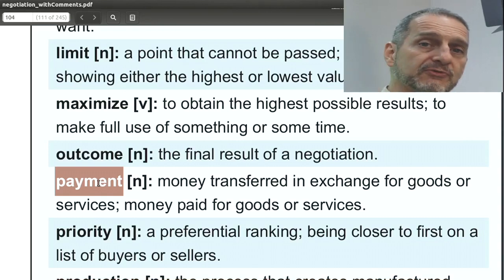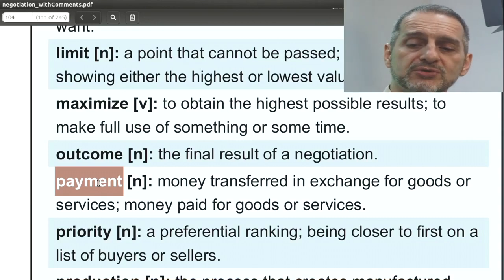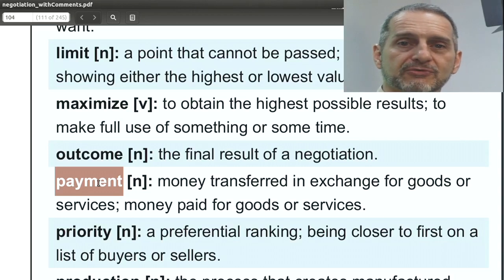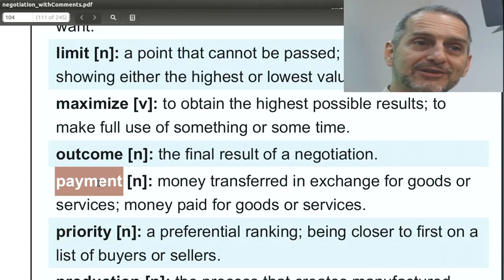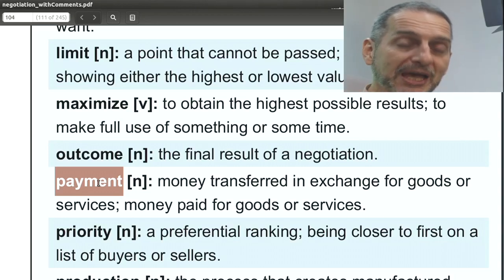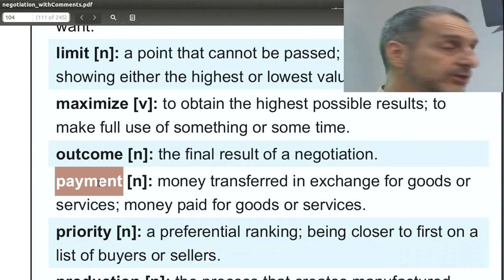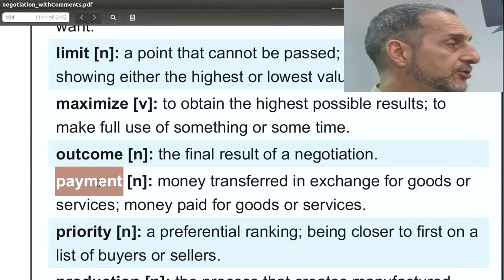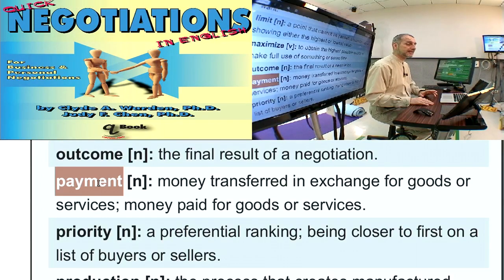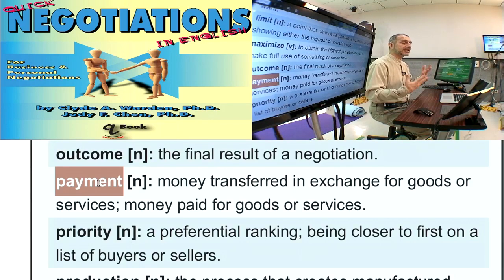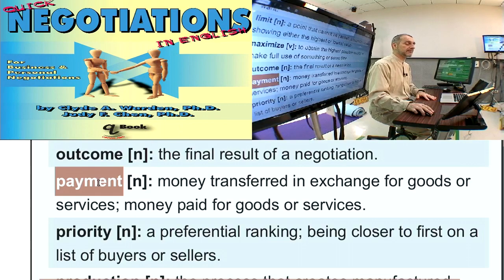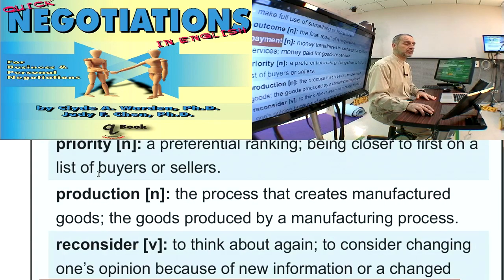Payment is money transferred from buyer to seller — though a product transferred from seller to buyer is kind of like a payment too. Usually payment we're talking about is just the money. We use this in our negotiation when we talk about: are you going to send the payment? How are you going to make the payment? How are you going to complete the payment? There could be many ways — through banking, electronic transfer, or some other system.